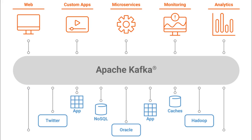Apache Kafka thankfully solves this data integration problem for us. Any microservice or component of a software system which wants to produce some data can write that data into Apache Kafka. On the other hand, any service which wants to consume data from a particular producer can request that data from Apache Kafka. For example, a microservices component can write events into Kafka, and other components — say Hadoop for processing, or an analytics module — can all read from Apache Kafka. So instead of writing N-choose-2 data integrations, we just write simple code that either writes data into Kafka as a producer or reads data from Kafka as a consumer.